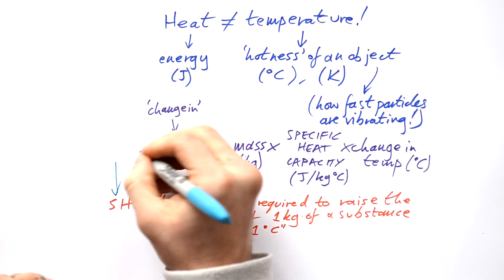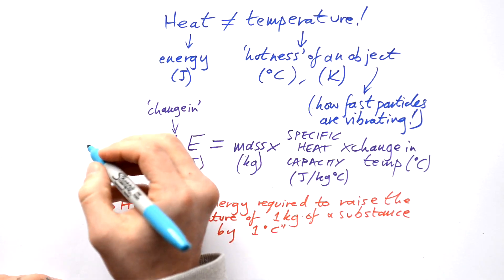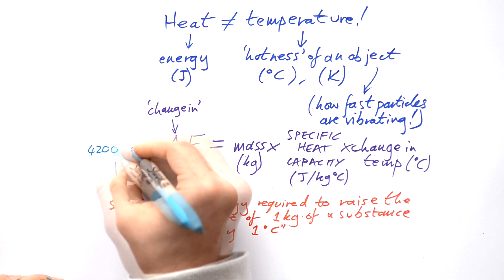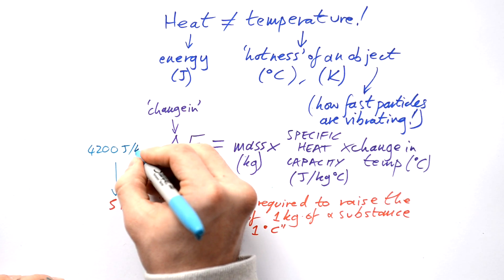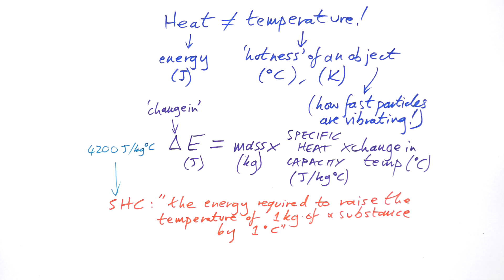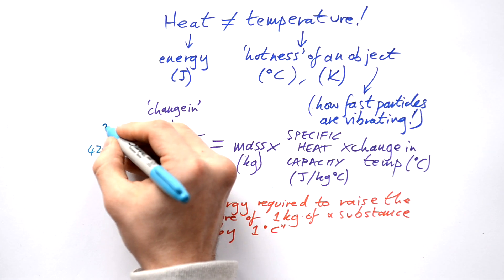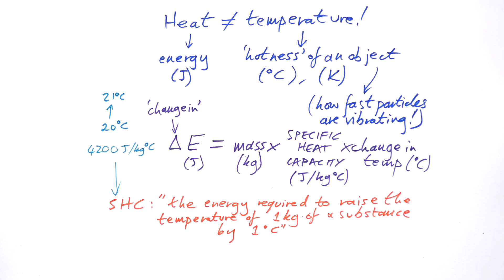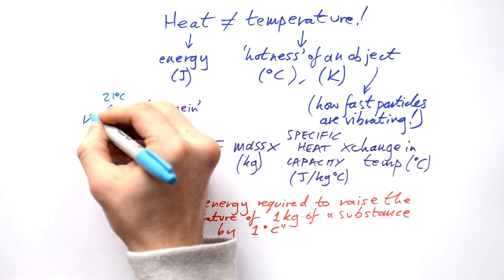The textbook definition of SHC is the energy required to raise the temperature of one kilogram of a substance by one degree Celsius — or one degree Kelvin, which is the same thing in this case. For water, SHC is 4200 joules per kilogram per degree Celsius. In other words, if you have a kilogram of water and you want to raise its temperature by one degree Celsius, you need 4200 joules of energy.